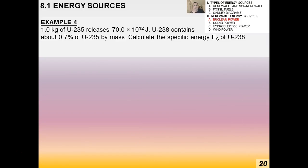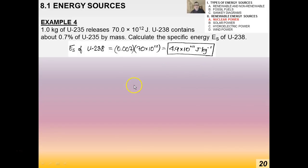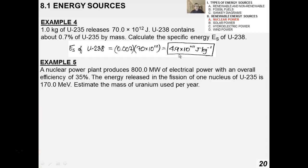For a worked example: one kilogram of U-238 contains about 0.7% uranium-235 by mass. To calculate the specific energy, it's simply 0.007 times the energy release of U-235, giving 4.9 × 10¹¹ joules per kilogram.